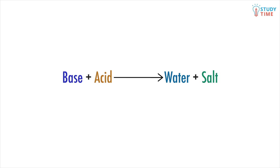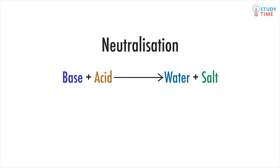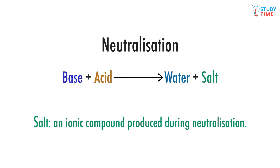If we add a base to an acid, they cancel each other out, and the hydrogen and hydroxide ions produce water and a salt. This is called neutralization. A salt is just an ionic compound produced during neutralization.